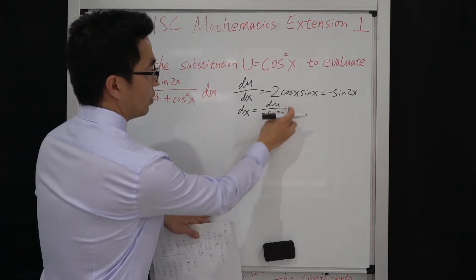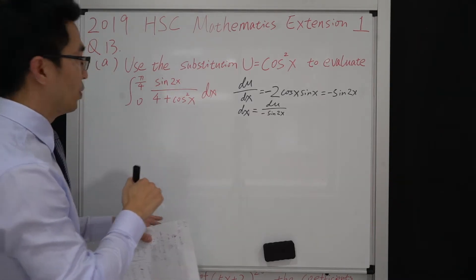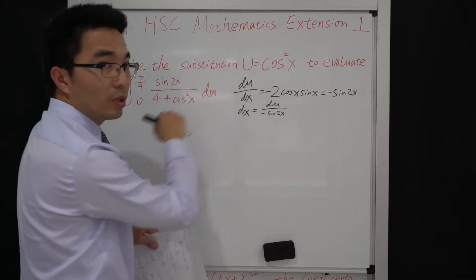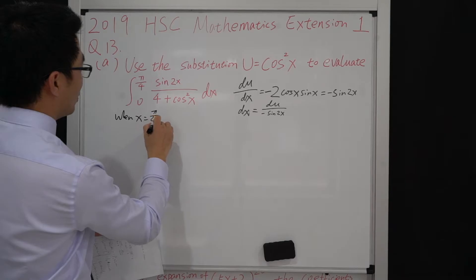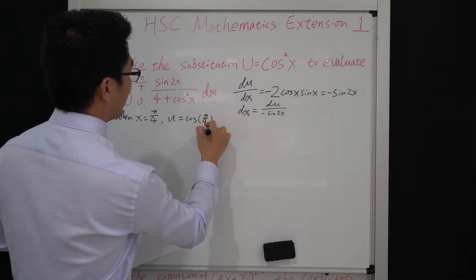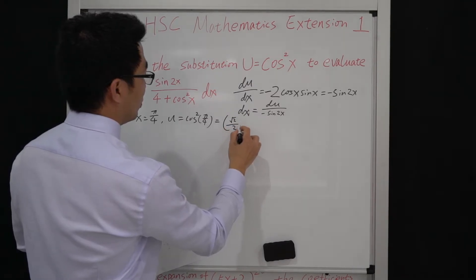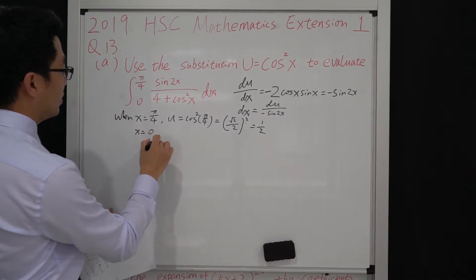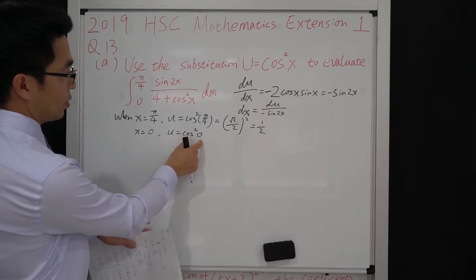We can use this whole term to replace dx, and we also have to change the integration interval. For x it's from 0 to π/4, but for u it's different. When x equals π/4, u equals cos²(π/4), which equals (√2/2)² equal to 1/2. When x equals 0, u equals cos²(0) equals 1² equals 1.